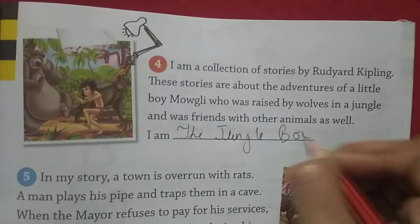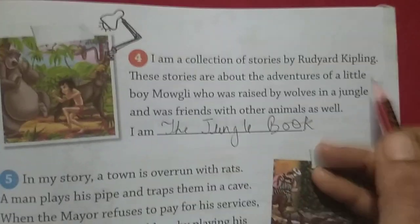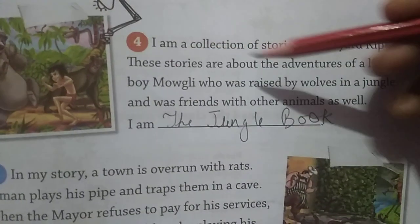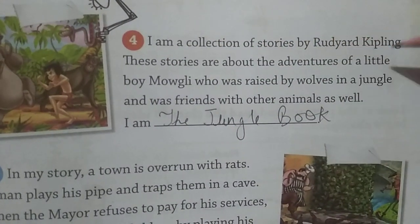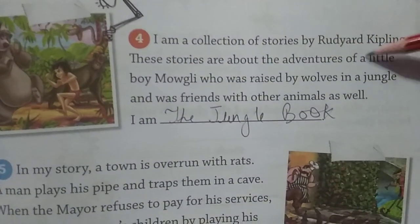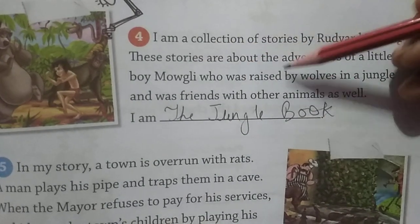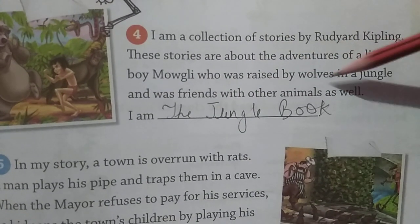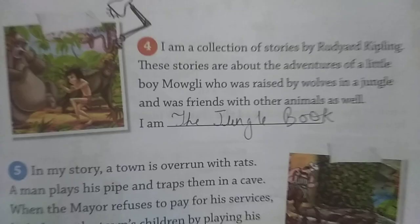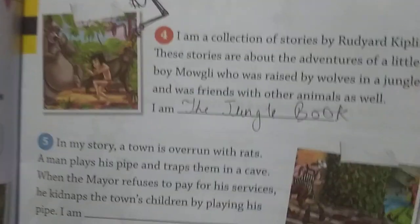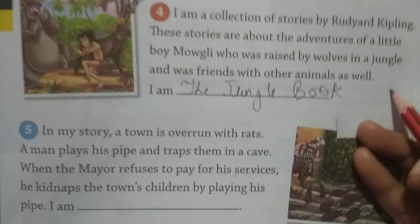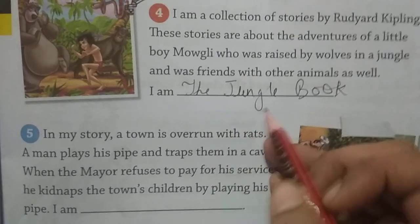This book is called The Jungle Book. It is a collection of stories by Rudyard Kipling. These stories are about the adventures of a little boy named Mowgli, who was raised by wolves in the jungle and was friends with many other animals.